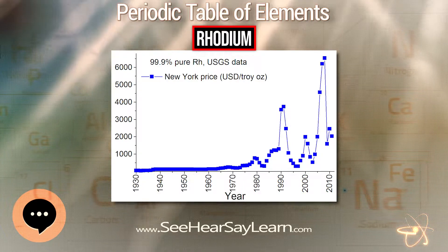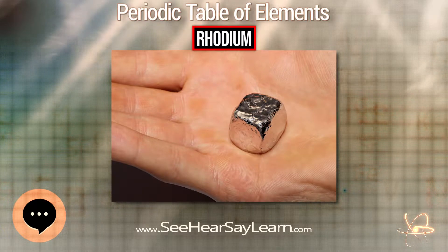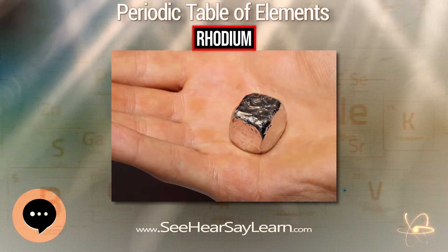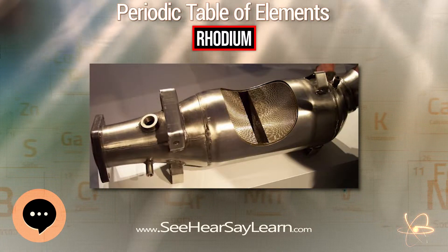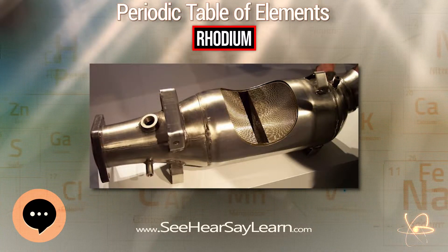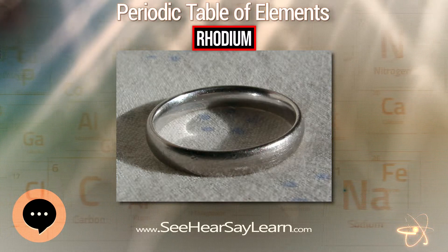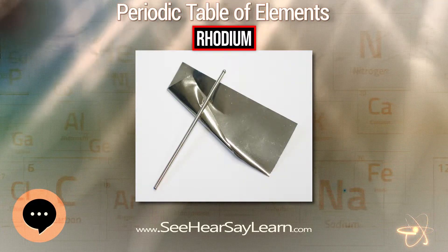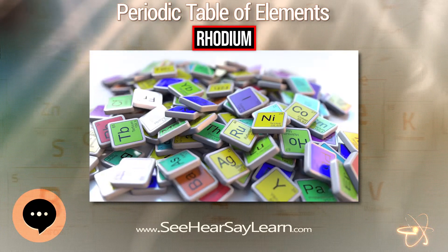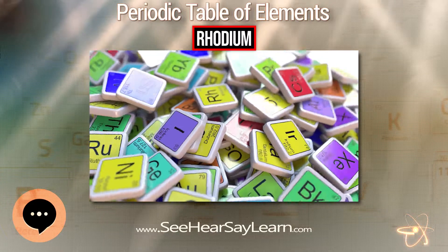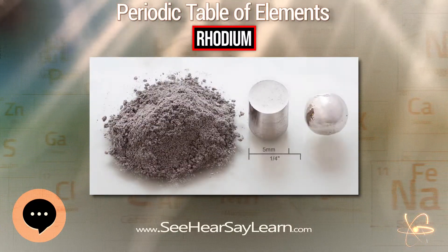Rhodium is a hard, silvery, durable metal that has a high reflectance. Rhodium metal does not normally form an oxide even when heated; oxygen is absorbed from the atmosphere only at the melting point of rhodium but is released on solidification. Rhodium has both a higher melting point and lower density than platinum. It is not attacked by most acids, is completely insoluble in nitric acid, and dissolves slightly in aqua regia.